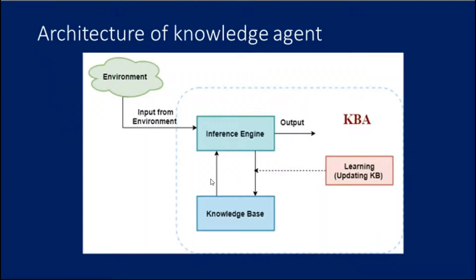The diagram represents the generalized architecture of a knowledge-based agent. The knowledge-based agent takes input from the environment by perceiving it. The input is taken by the inference engine, which also communicates with the knowledge base to decide as per the stored knowledge. The learning element of the knowledge-based agent regularly updates the knowledge base by learning new knowledge. The central component is known as KB — a collection of sentences expressed in a knowledge representation language — and it stores facts about the world.